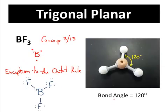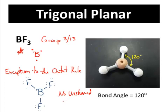The next shape is called trigonal planar. In this shape, every bond is 120 degrees apart from each other. This is typical of group three or thirteen elements, and specifically we really only see this in boron. Boron is an exception to the octet rule — it only needs six electrons in the outer shell. In boron trifluoride, one boron is bonded to three different fluorines, and there are no unshared electron pairs on the central atom. All its electrons are used up, so it spreads apart to 120 degrees in every direction.